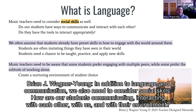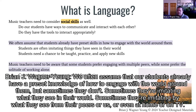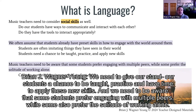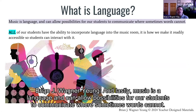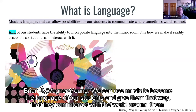In addition to language and communication, we also need to consider social skills — how are our students communicating and interacting with each other, with us, and with their environment? We often assume students already have preset knowledge of how to engage with the world, but sometimes they don't. Sometimes they're imitating what they see from peers, from us, or from home or TV. We need to give students a chance to be taught, practice, and apply these new skills. Music is a language and can allow possibilities for our students to communicate where sometimes words cannot.